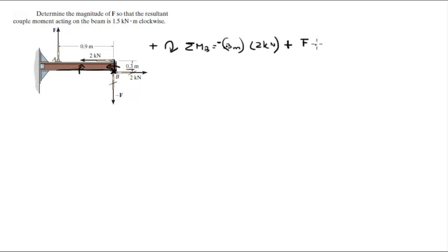Plus f times the length of this lever arm which has a length of 0.9. It has to create a moment of 1.5 kNm is equal to negative 0.3 times 2 kN plus f times 0.9.